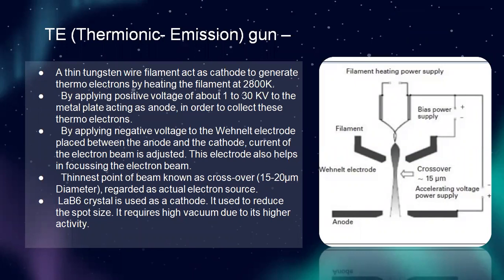First, the thermionic emission gun: a thin tungsten wire filament acts as cathode to generate thermoelectrons by heating the filament at 2800 K by applying a positive voltage of about 1 to 30 kV to a metal plate acting as anode to collect these thermoelectrons. By applying a negative voltage to the Wehnelt electrode placed between the anode and cathode, the front of the electron beam is adjusted. This electrode also helps in focusing the electron beam. The thinnest point of the beam, known as crossover, is 50 to 20 micrometers in diameter and is regarded as the actual electron source. A crystal is used as a cathode to reduce spot size. It requires high vacuum due to its higher activity. In the diagram: filament, base power supply, crossover of 50 micrometers, accelerating voltage power supply, anode, and Wehnelt electrode.